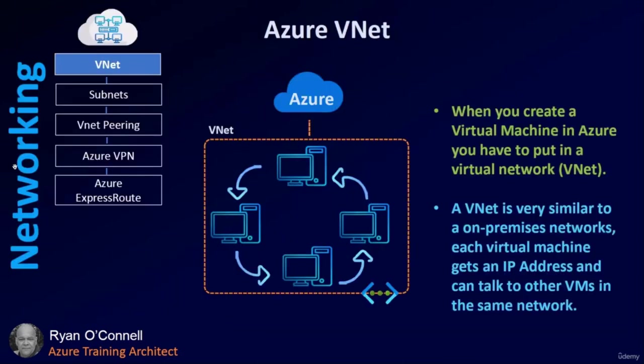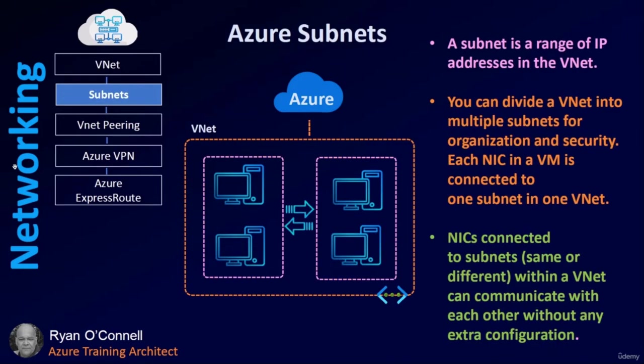Moving on to networking — VNets. When you create a virtual machine in Azure, you have to put it in a virtual network, or VNet. A VNet is very similar to an on-prem network; each virtual machine gets an IP address and can talk to other VMs in the same network. A subnet is a range of IP addresses in a VNet — you can divide a VNet into multiple subnets for security. Each NIC in a VM is connected to one subnet, and NICs on the same or different subnets within a VNet can communicate without any extra configuration.